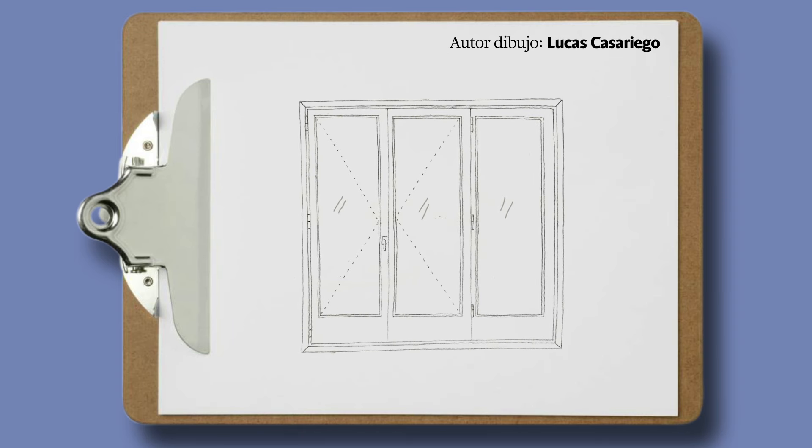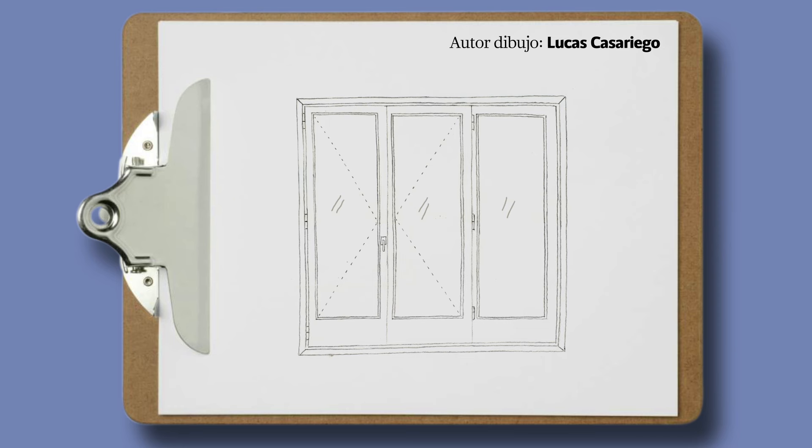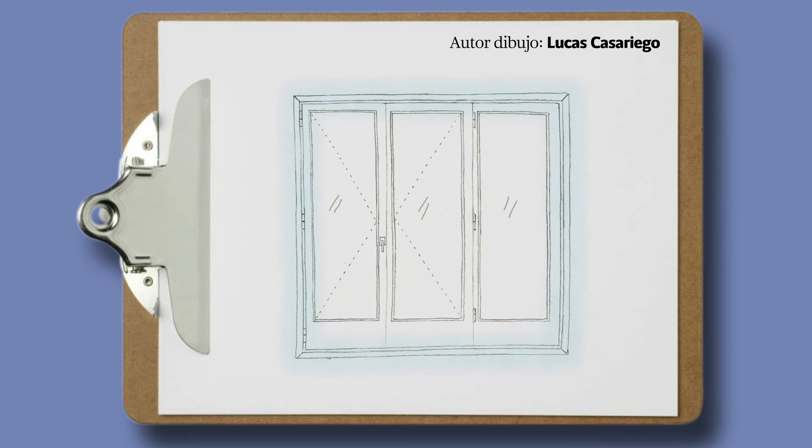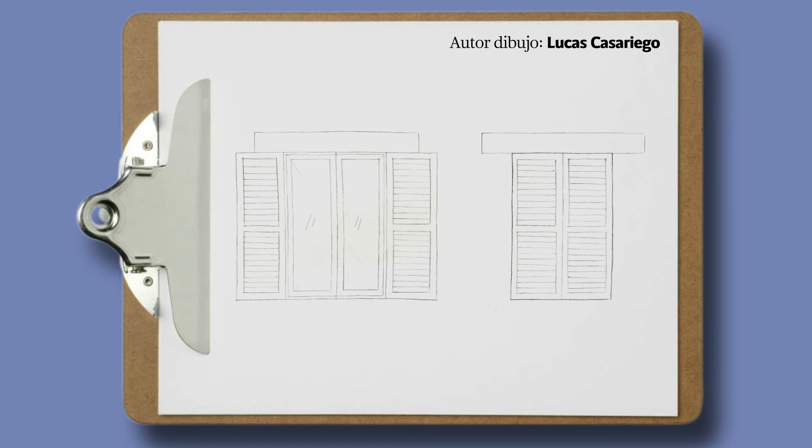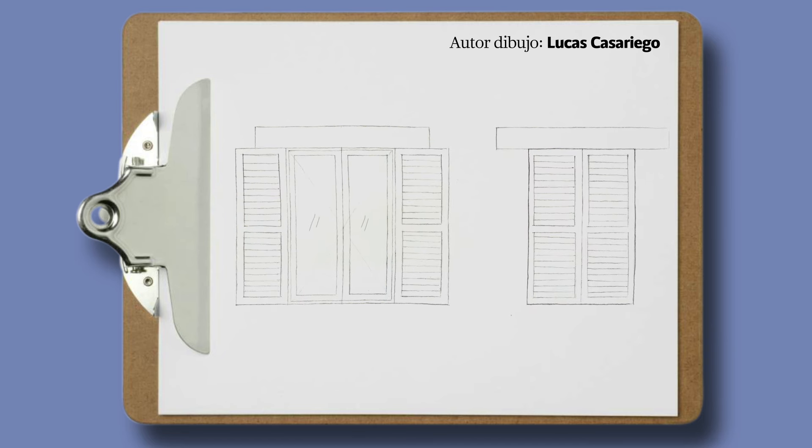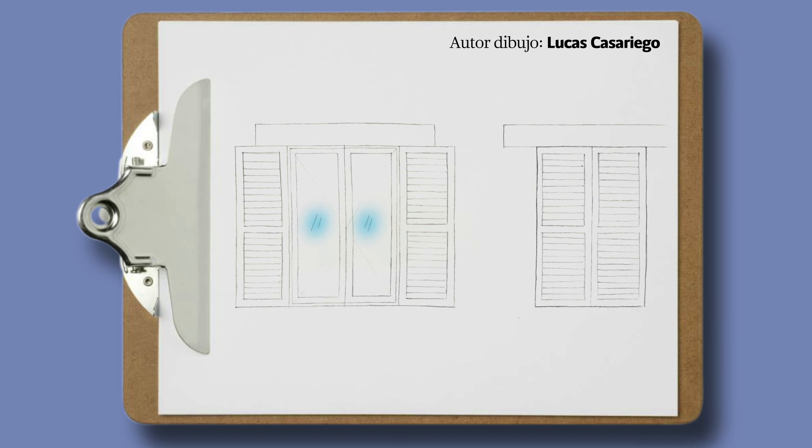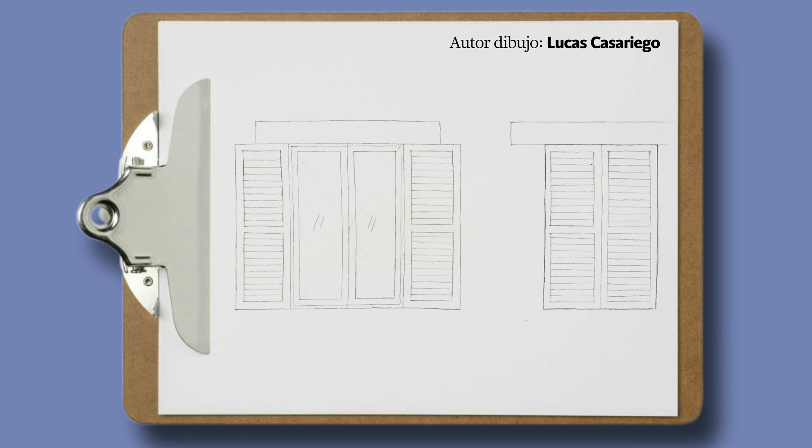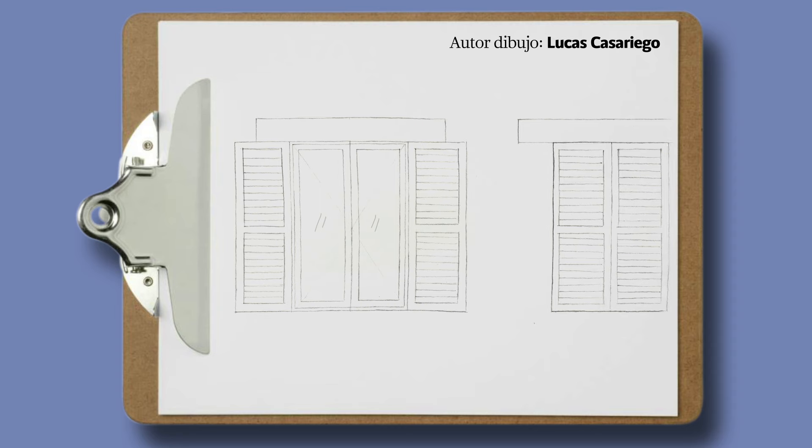Para las ventanas fijas no indicaremos nada más que las tres líneas que ya ponemos en todas. En las ventanas de celosía dibujaremos sus lamas. En todas ellas pondremos una doble línea como unas comillas en su parte central para representar qué es un cristal.